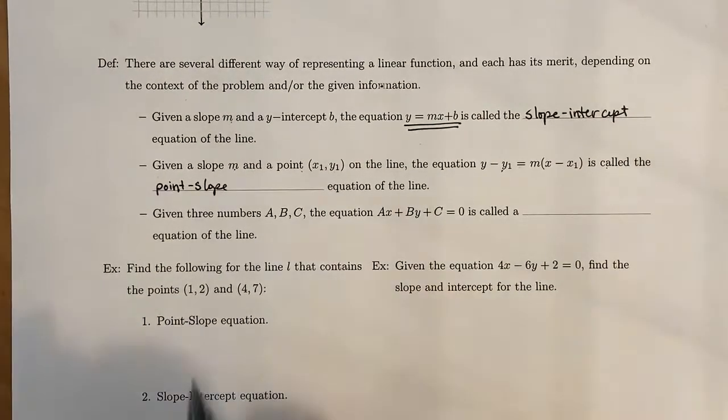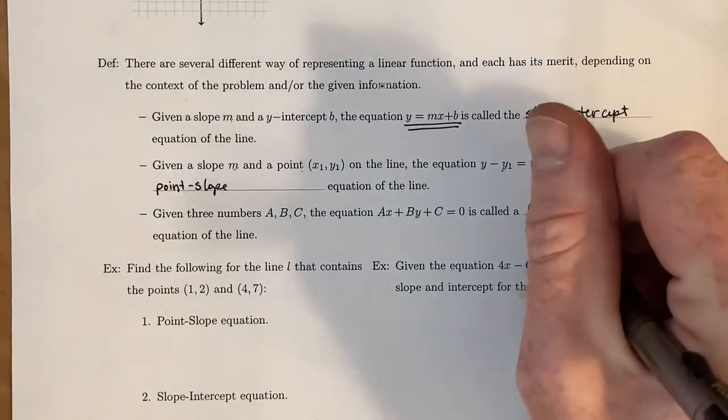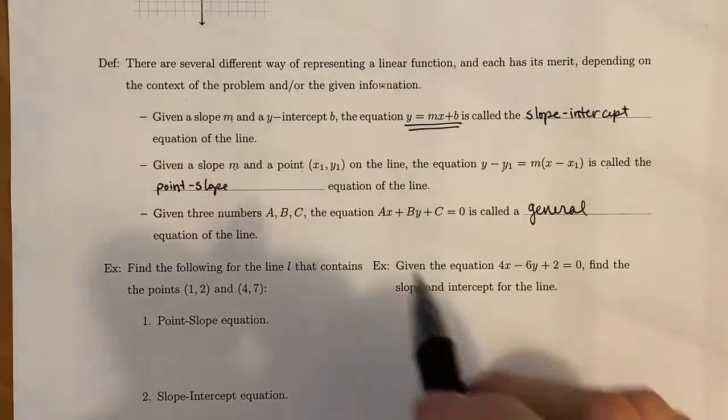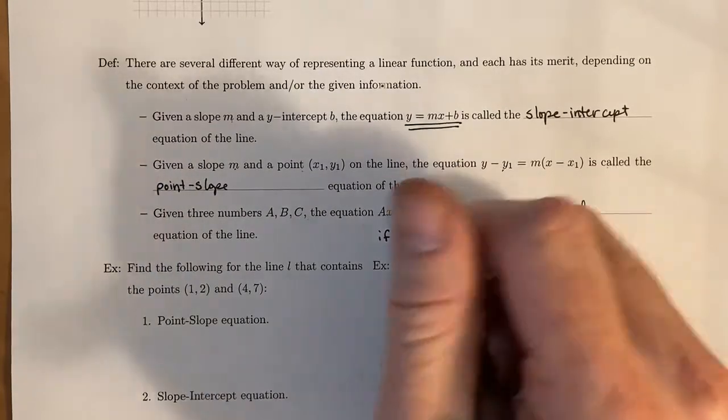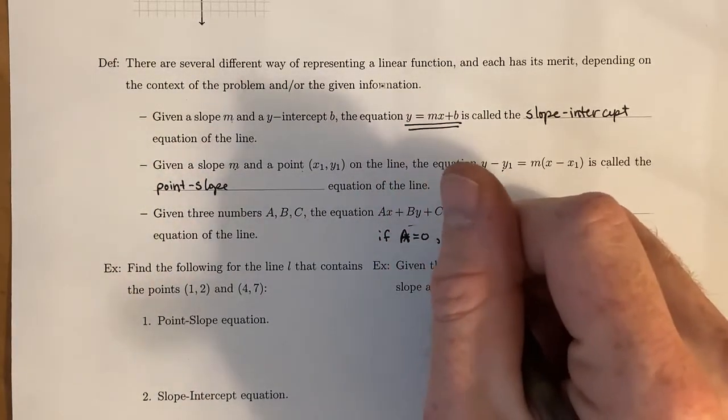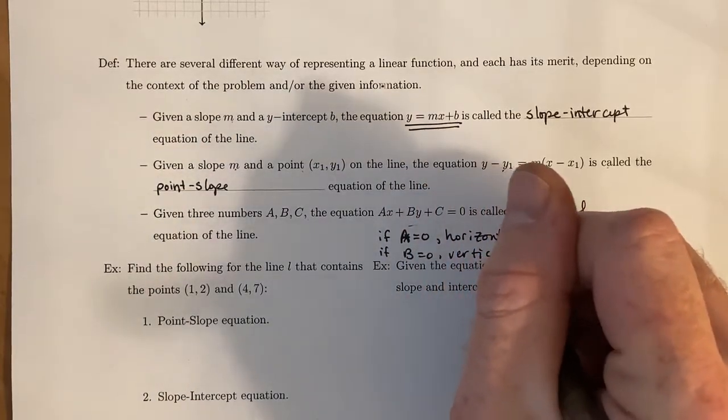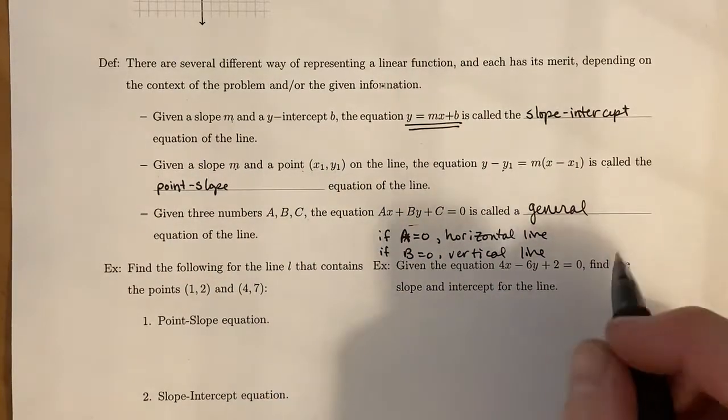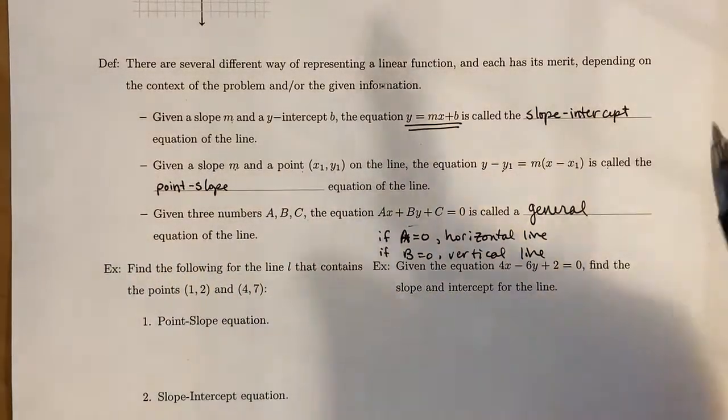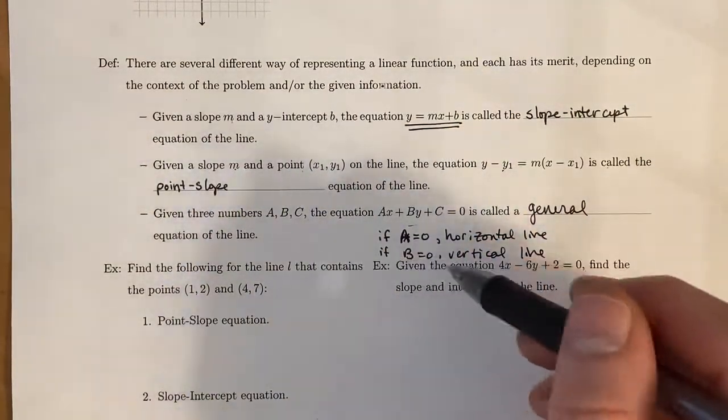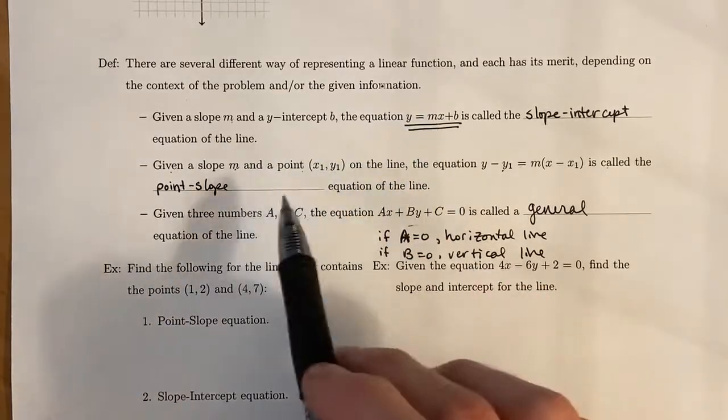The last one that you might not be really familiar with is if you're given three numbers a, b, c, then this equation ax plus by plus c equals 0 is called the general equation of the line. Now, the nice thing about this is that if a is equal to 0, you have a horizontal line. And if b is equal to 0, you have a vertical line. Remember that vertical lines have no slope, which is different than a horizontal line, which has a slope of 0. So the nice thing with this general equation of a line is that you can write both horizontal and vertical lines and pretty much any line you'd ever want to write in this form here. Whereas for the first two, you can only write lines that are non-vertical because there is a slope involved.